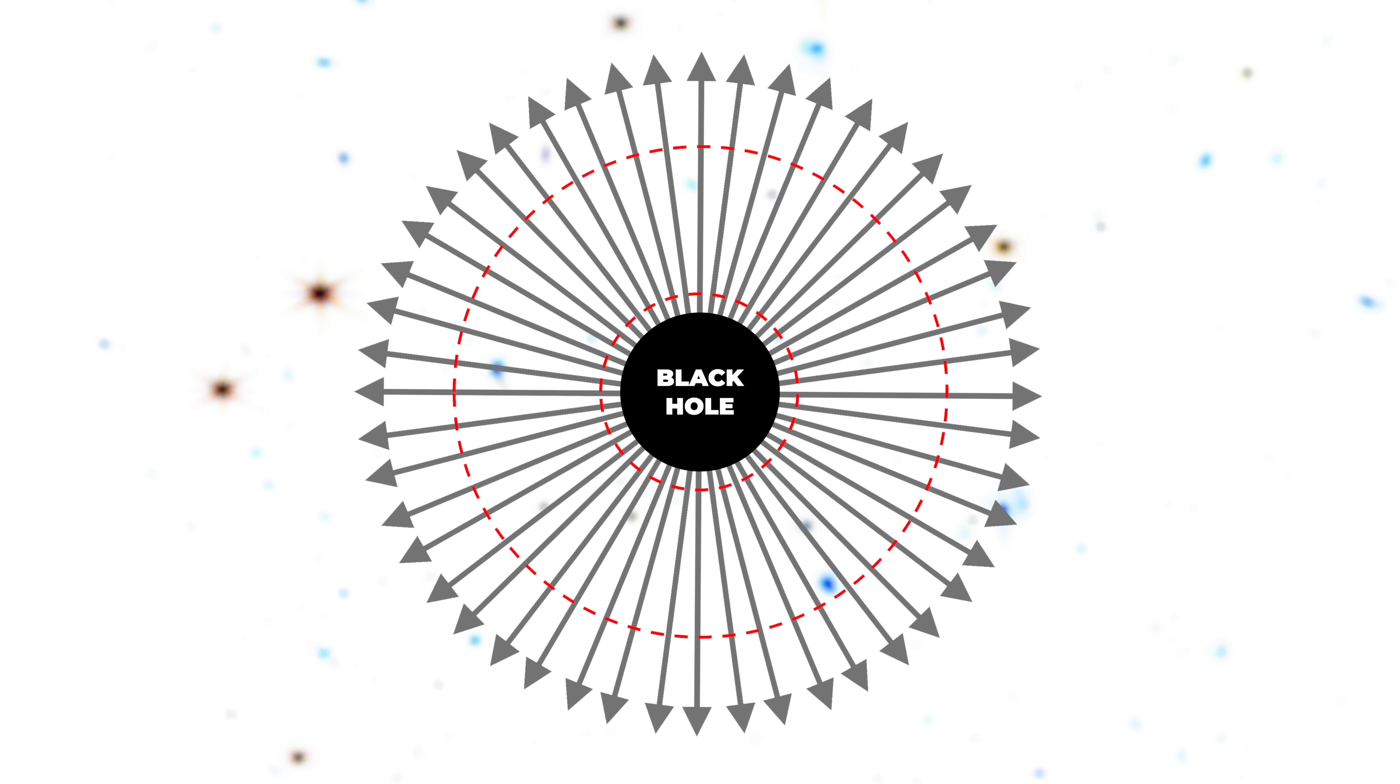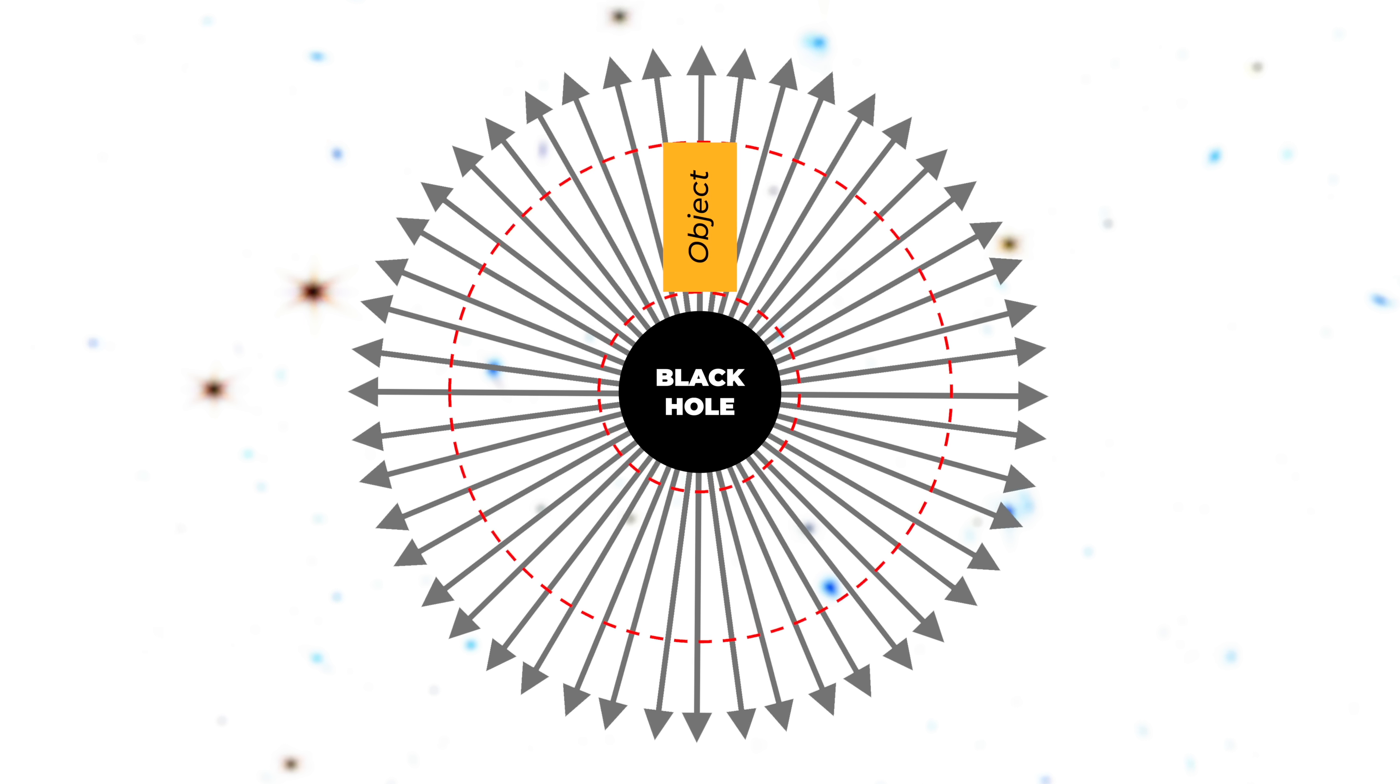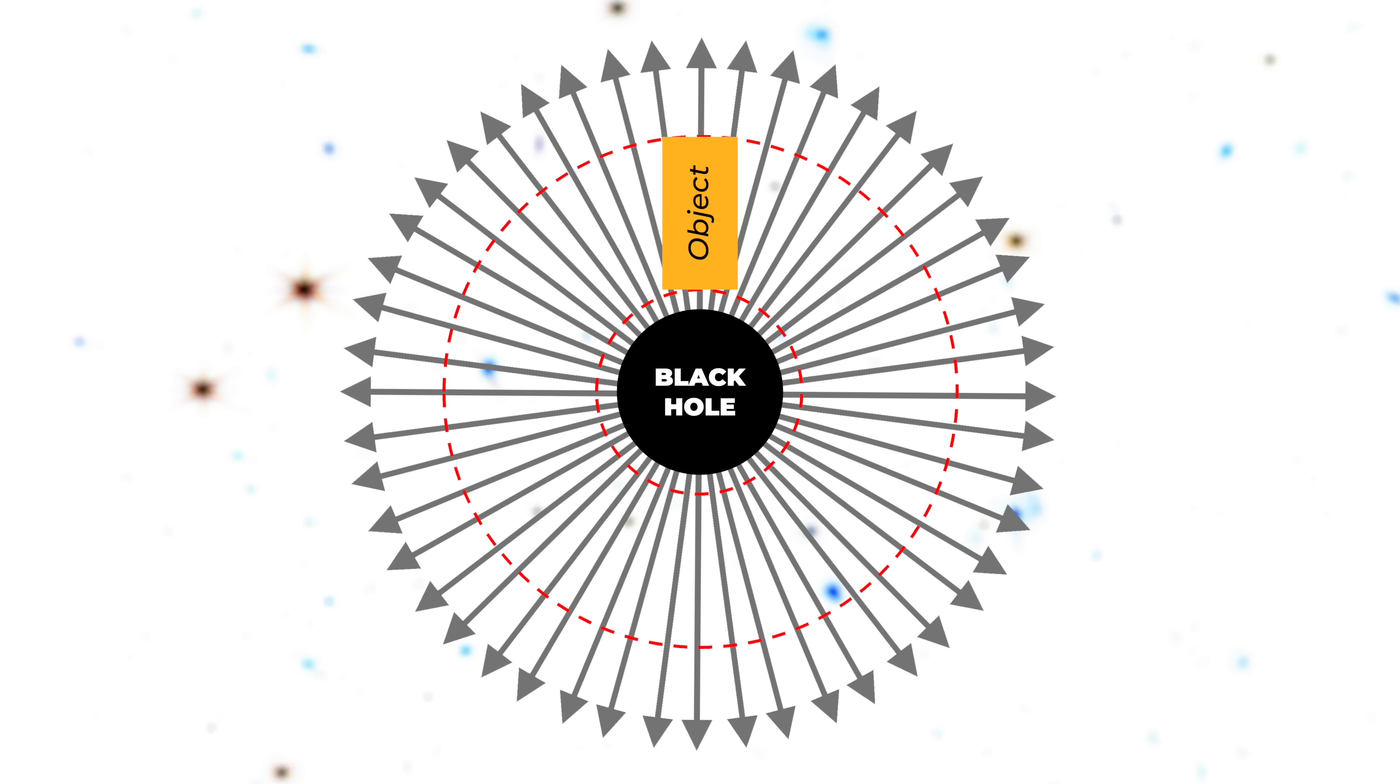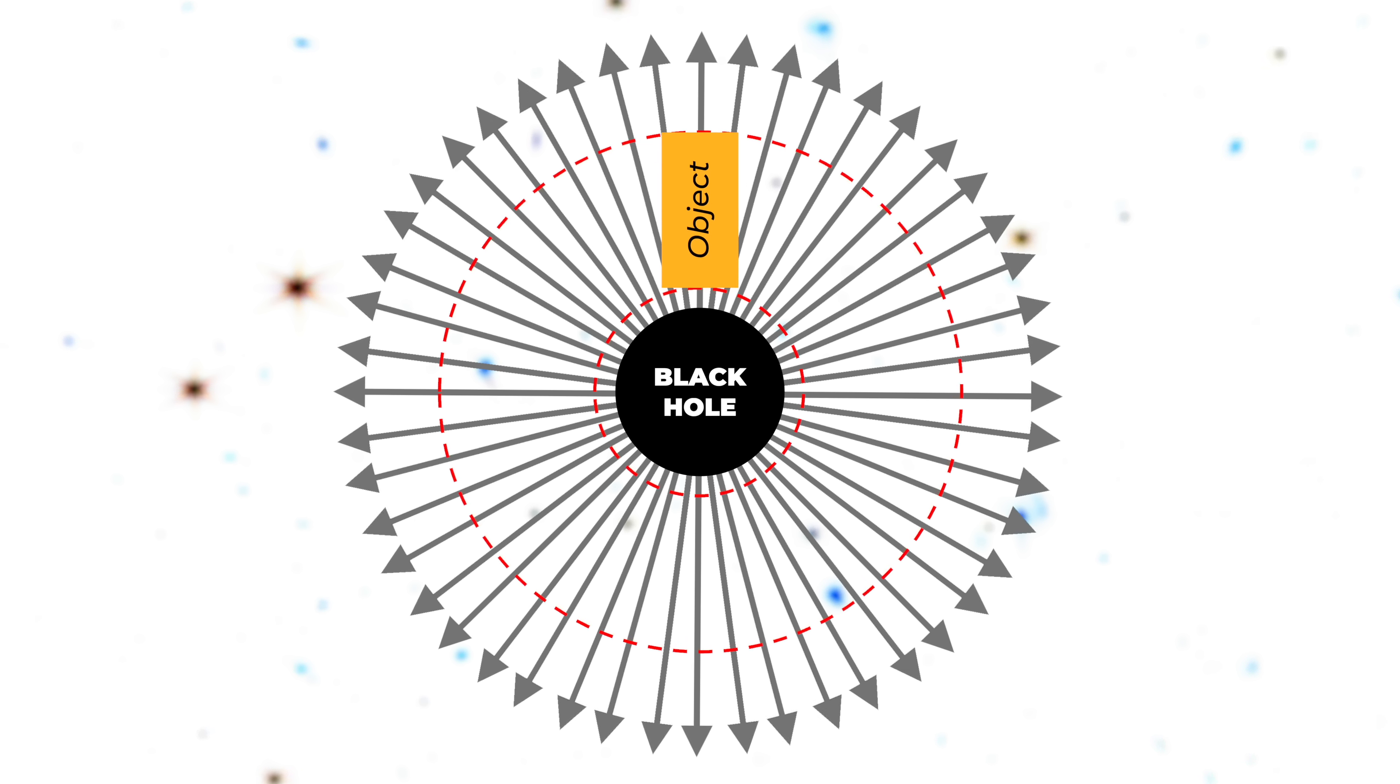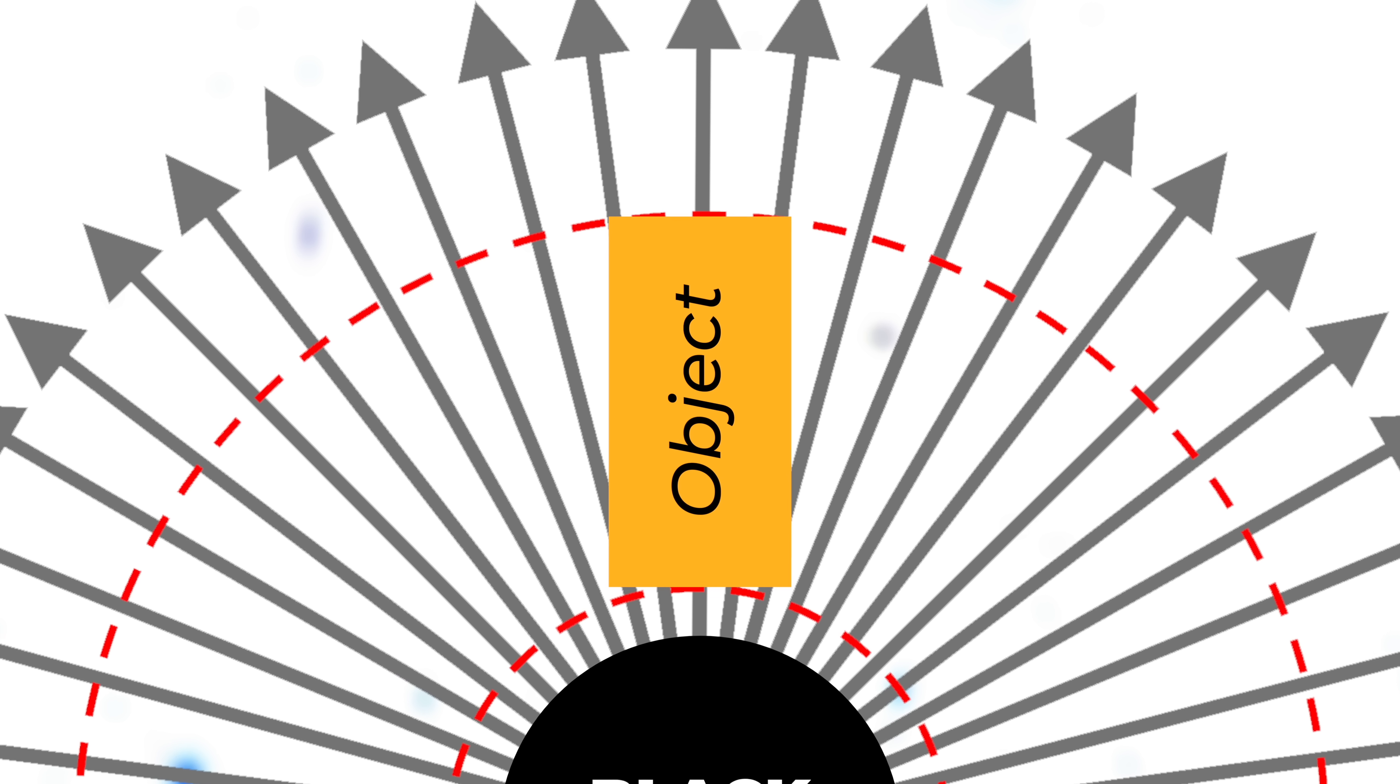So now let's add an object, in this case a simple box. The important thing is that the box has a size. And when we do this, we see that the edge of the box nearest the black hole has more lines going through it than the edge farther away from the black hole. In this case, five lines on the bottom and three on the top.